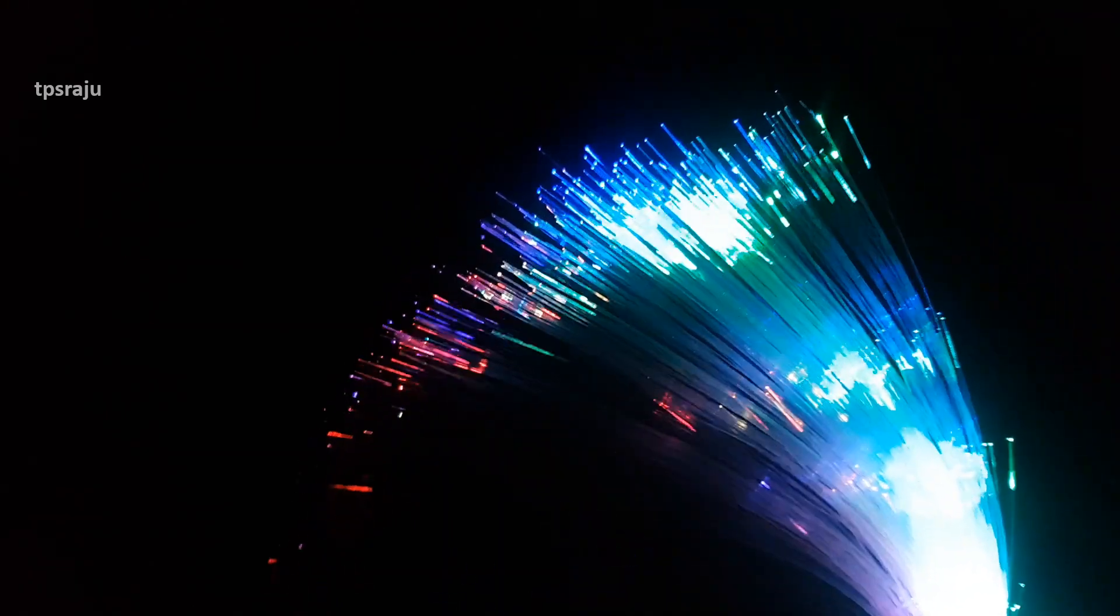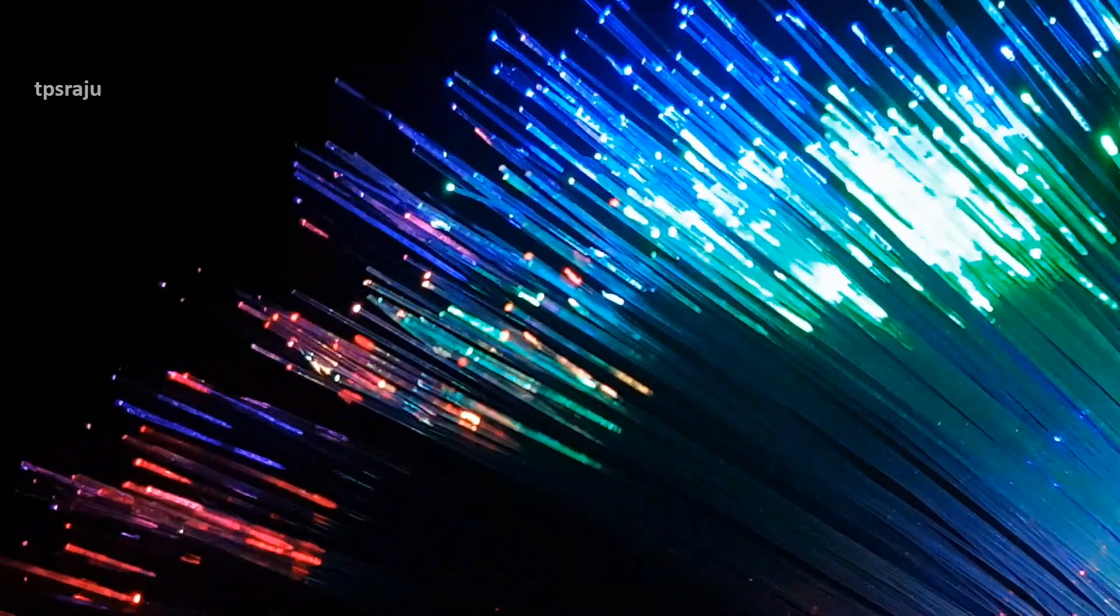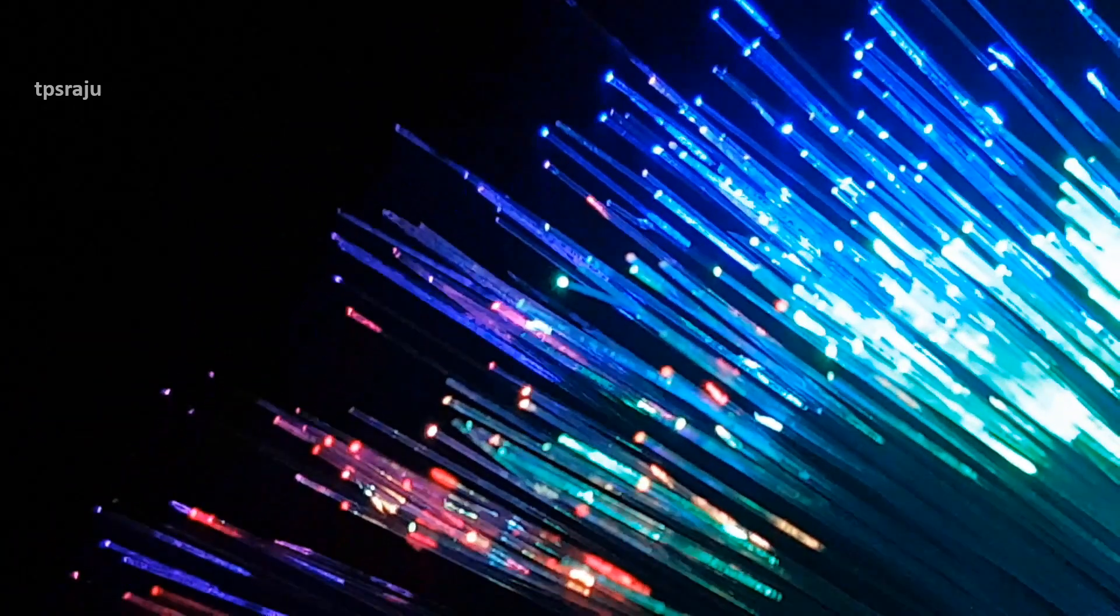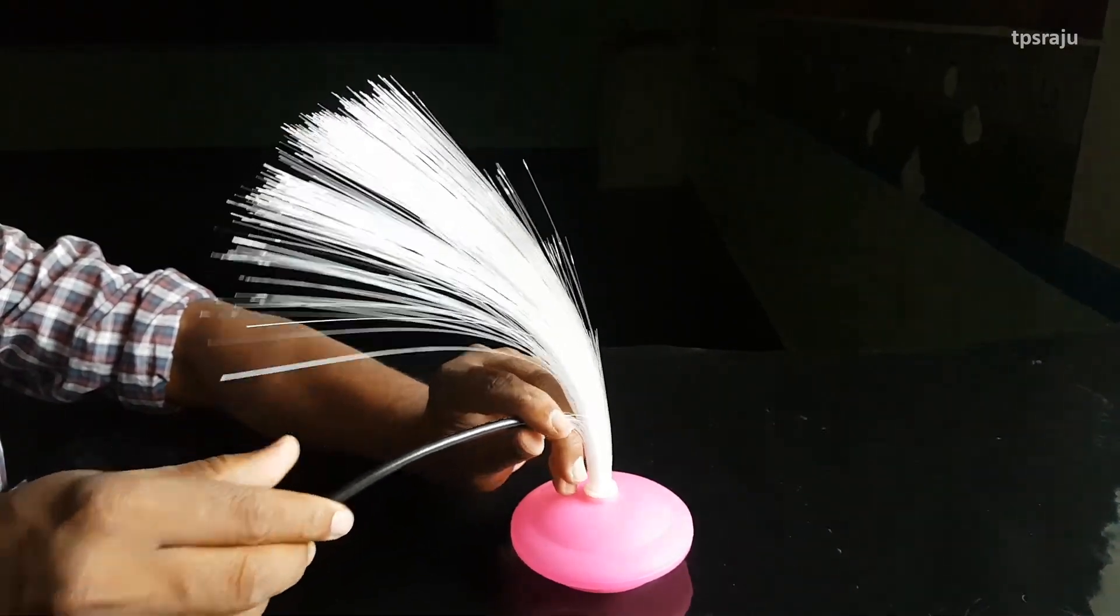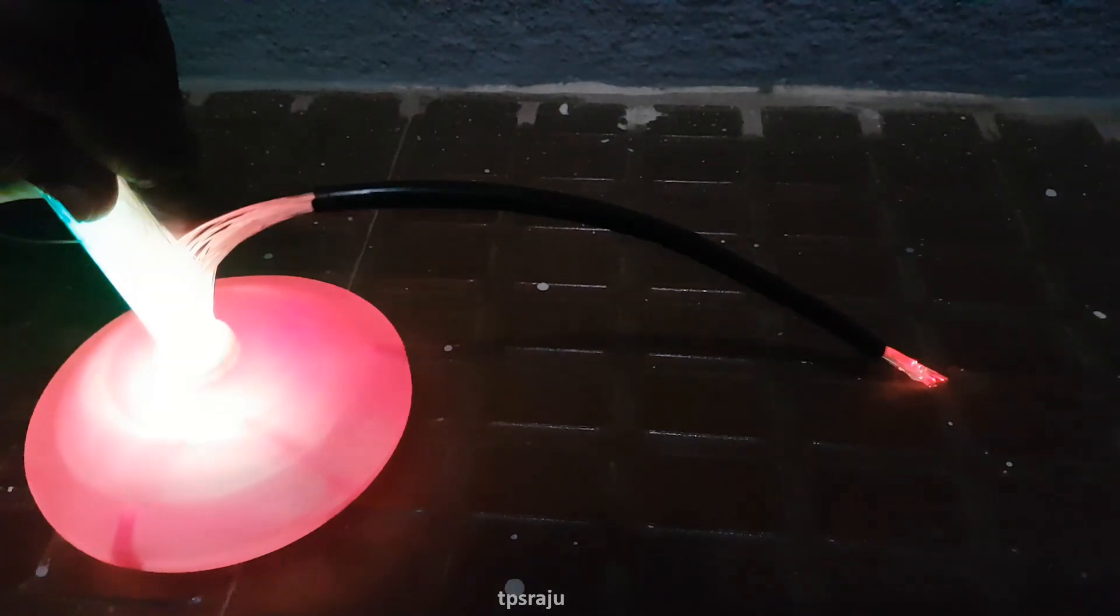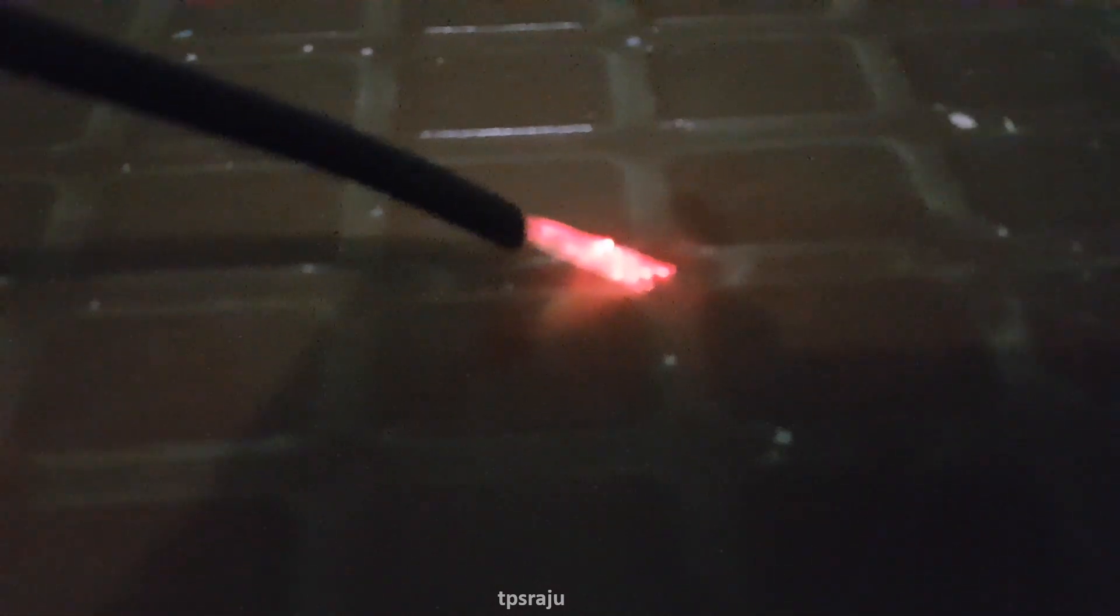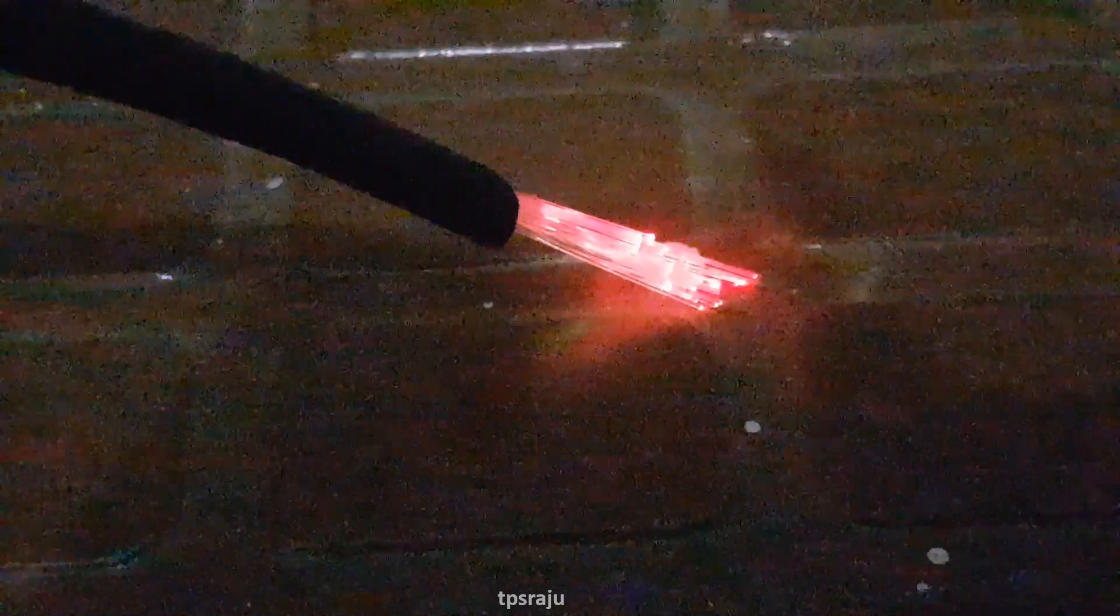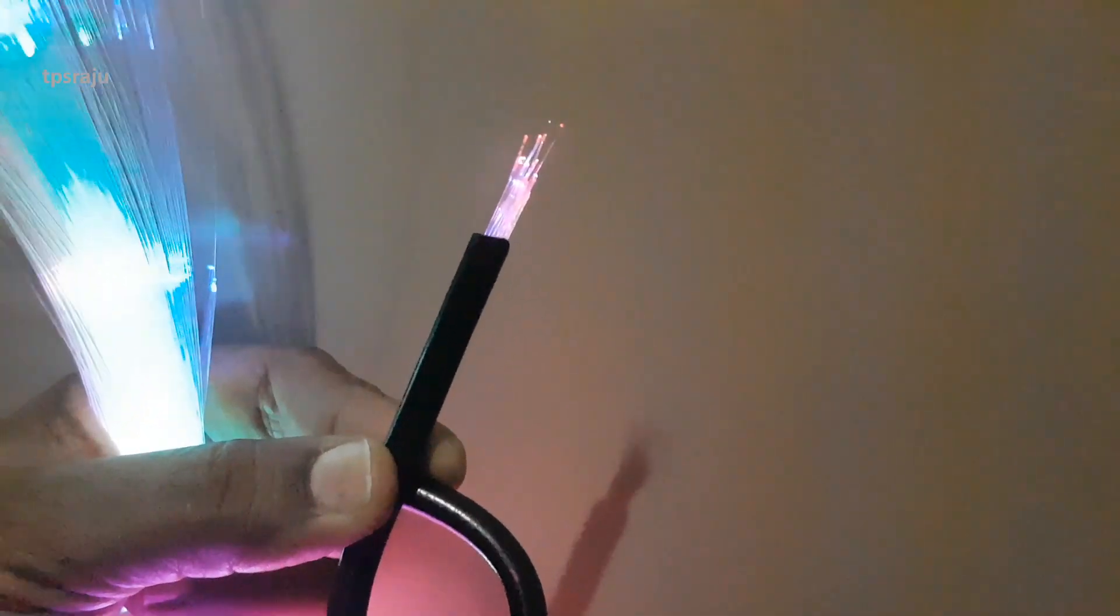Let us observe the transmission of light in optical fibers. Here we are inserting some optical fibers into a pipe. Observe here light is transmitted from one end to another end through the optical fibers which are inserted in the pipe.